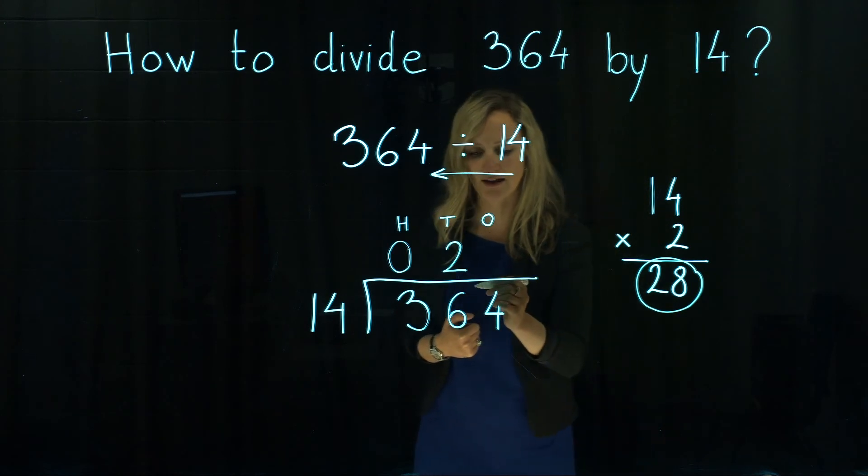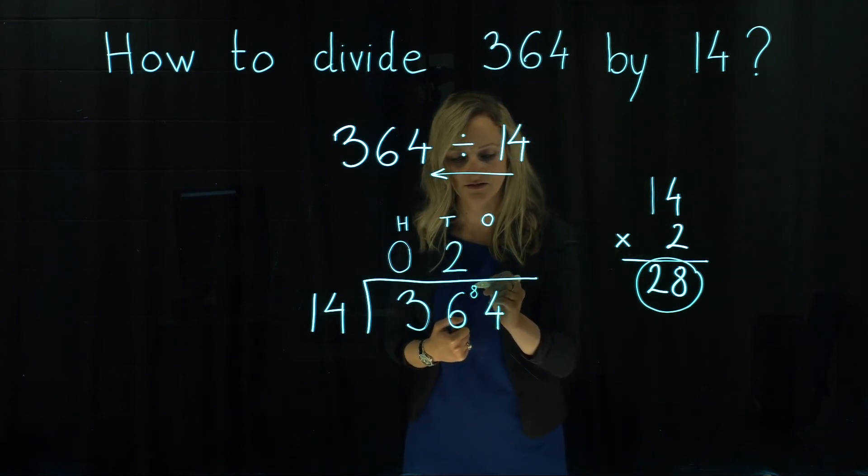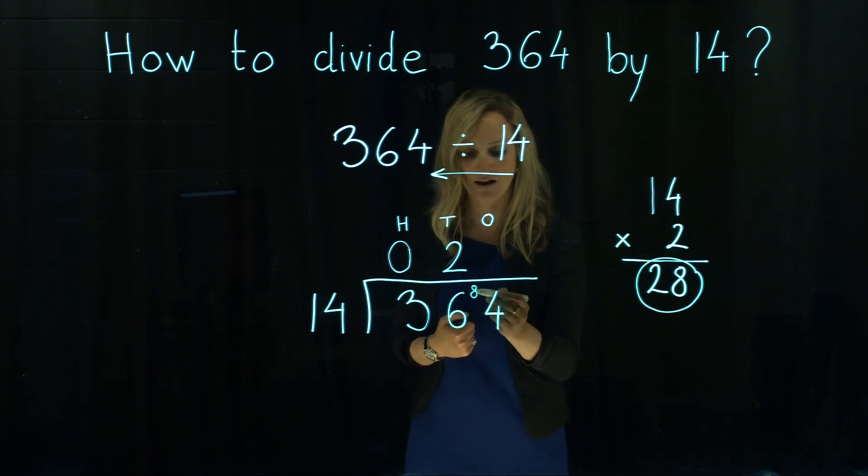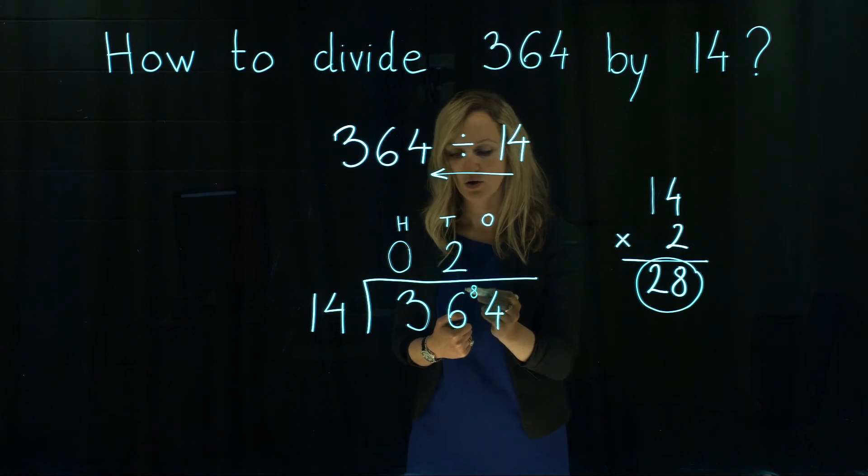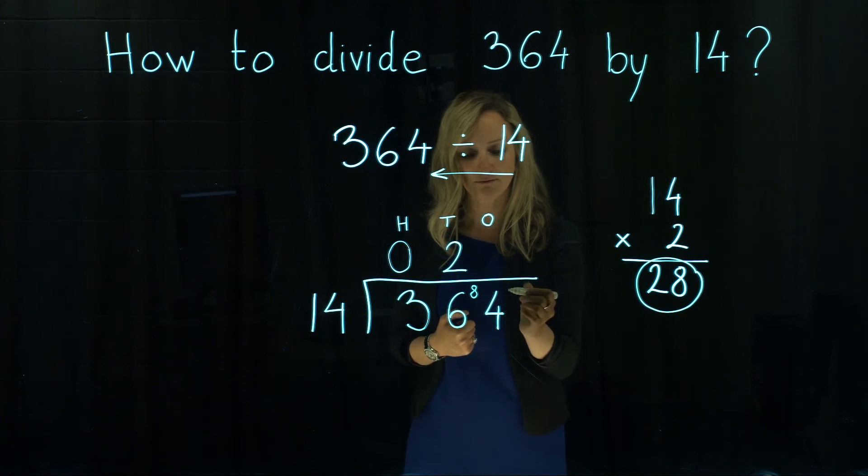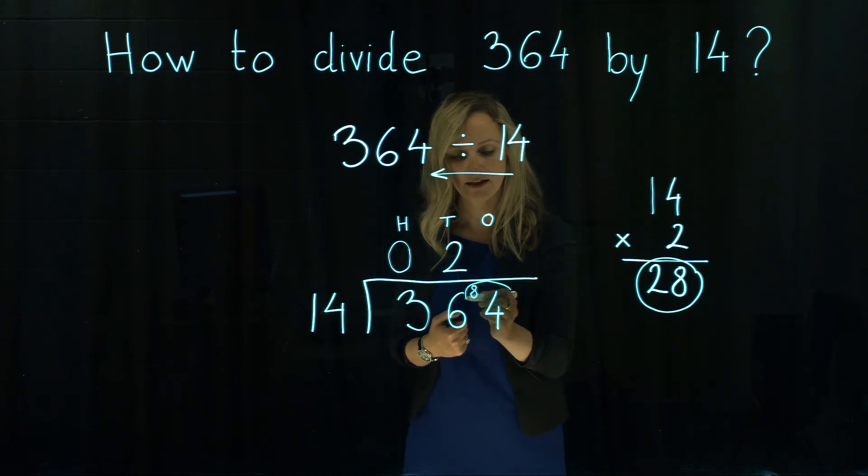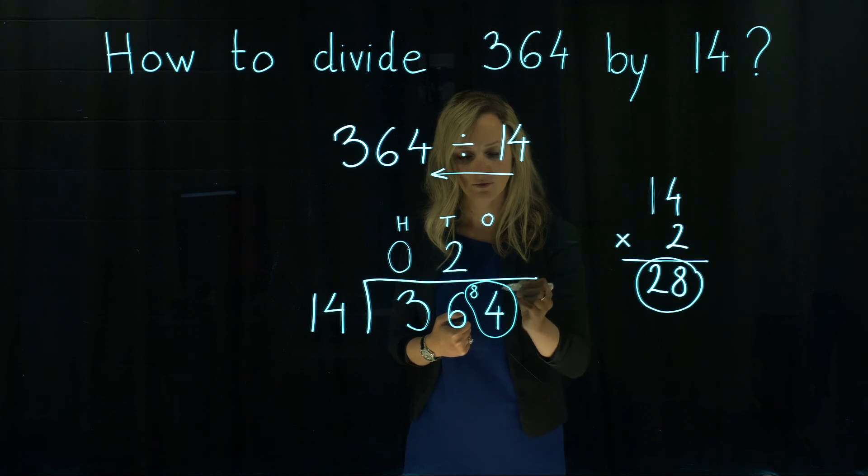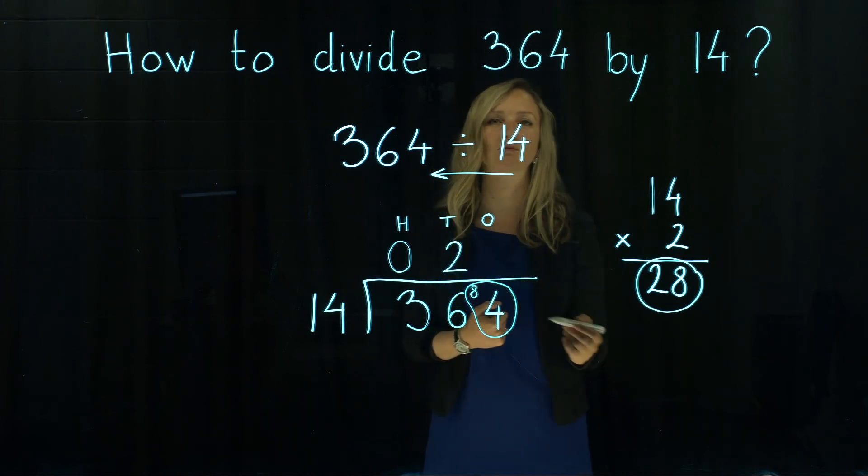We need exactly 8. So 28 plus remainder 8, we get to the number 36. Then we continue with our remainder and the next digit which will give us 8 and 4, will give us 84.